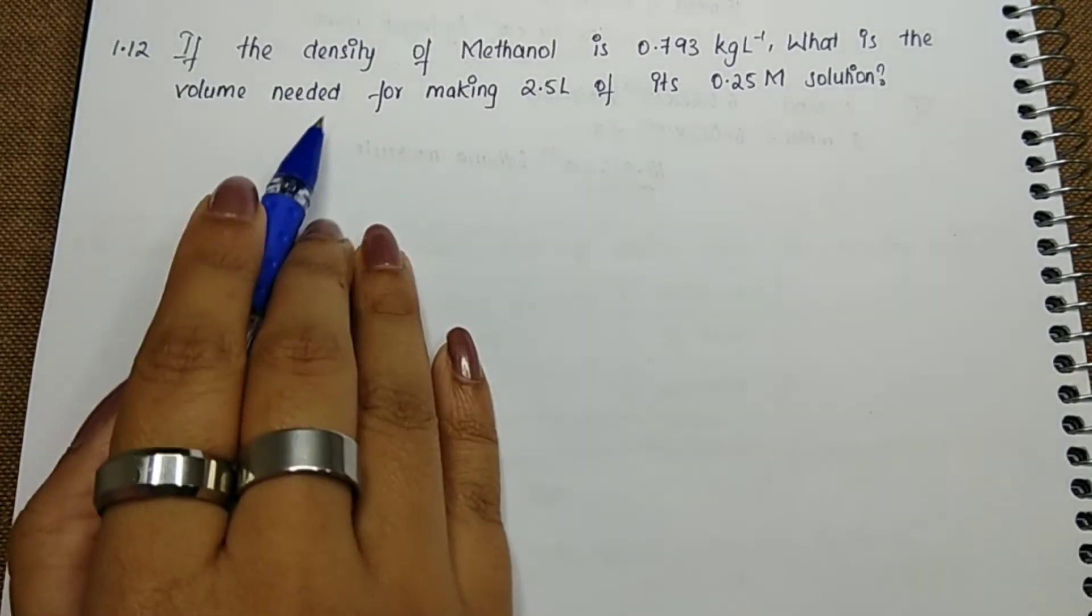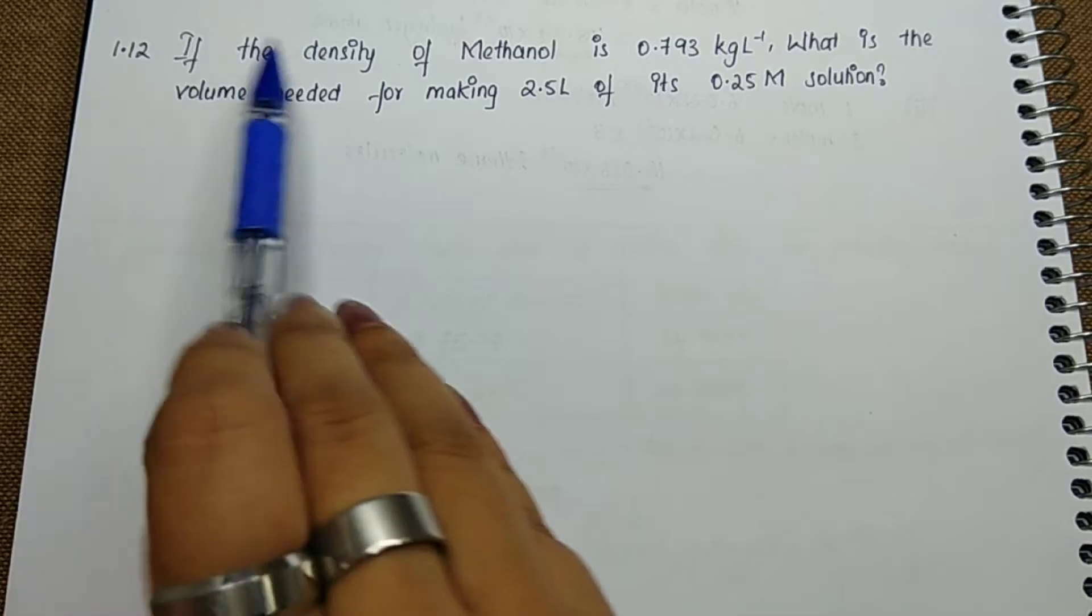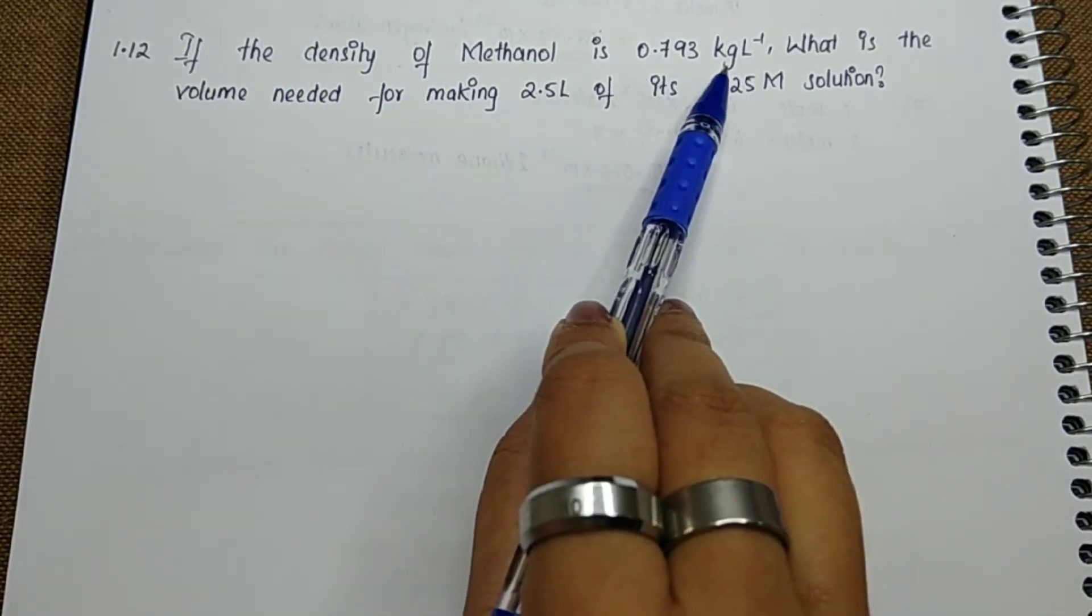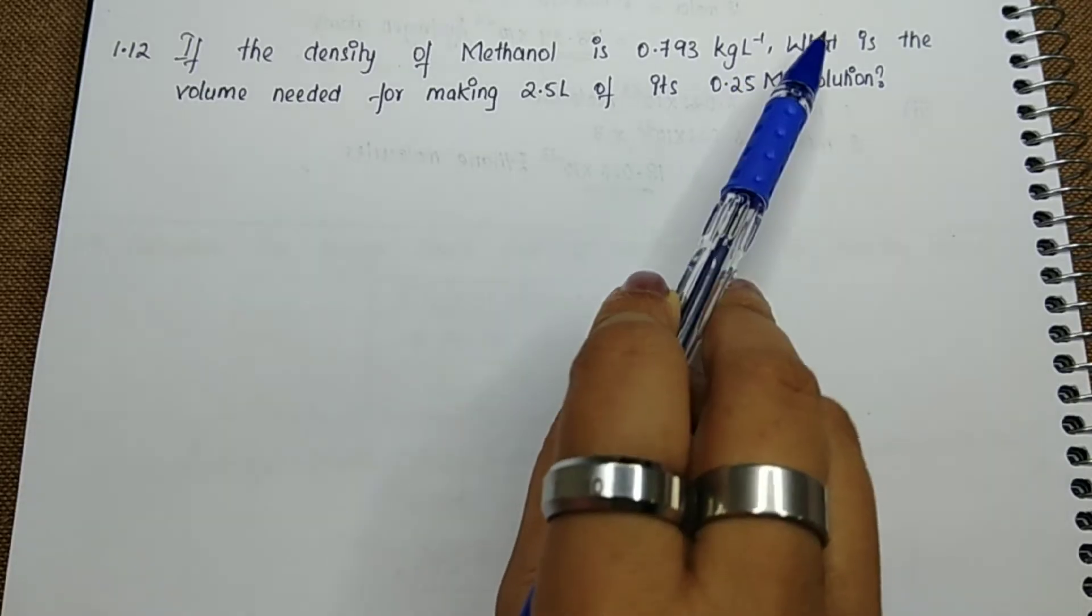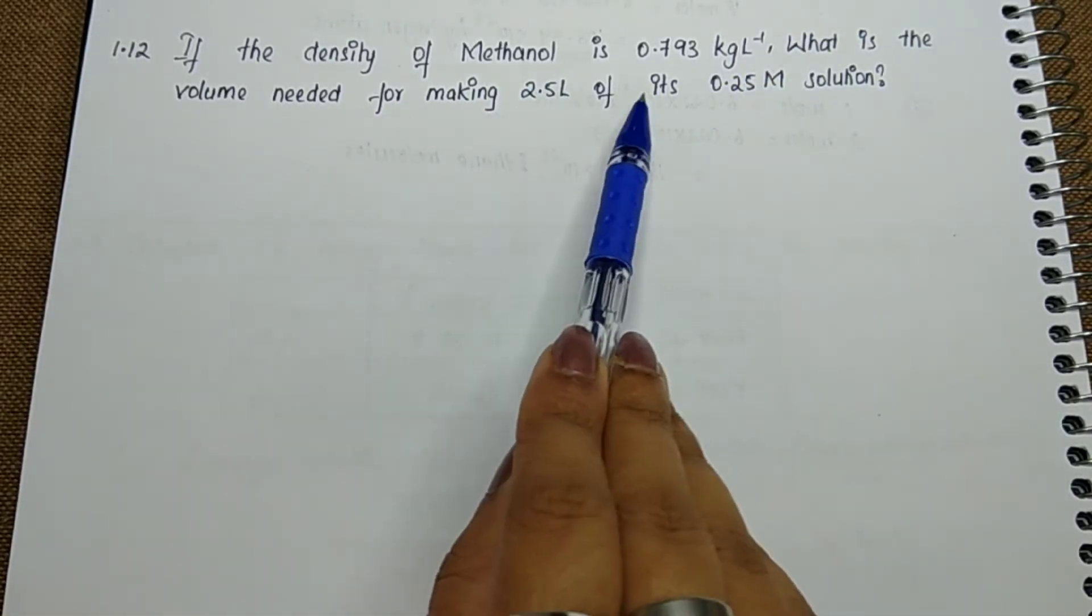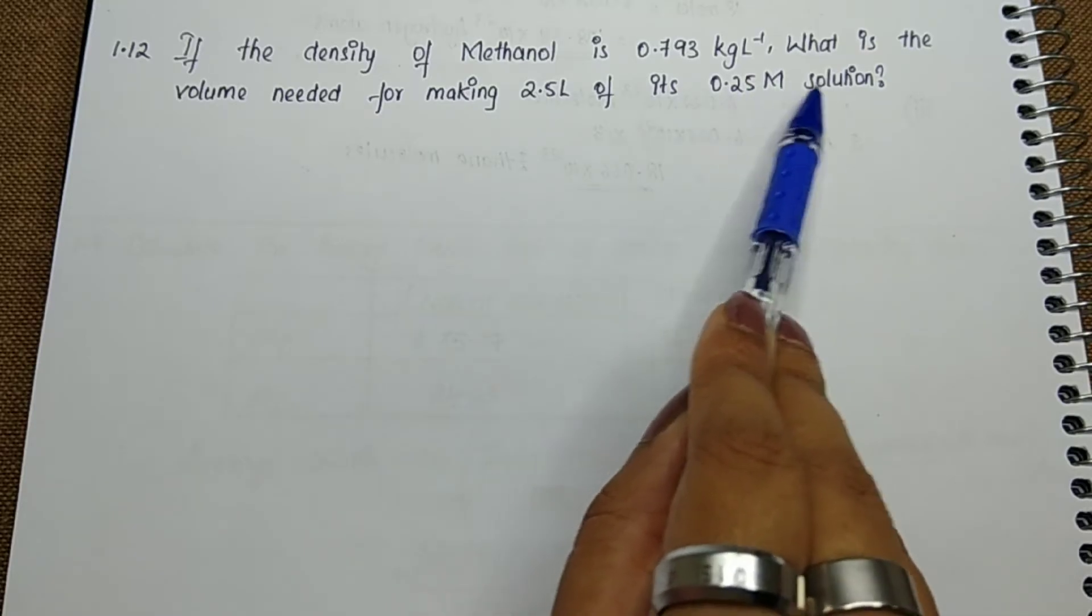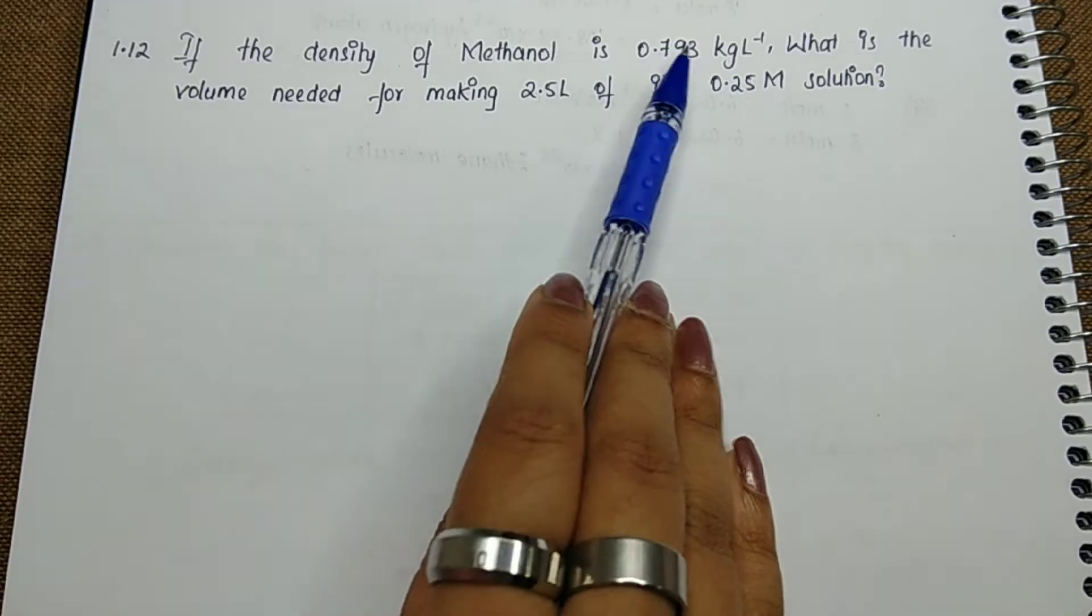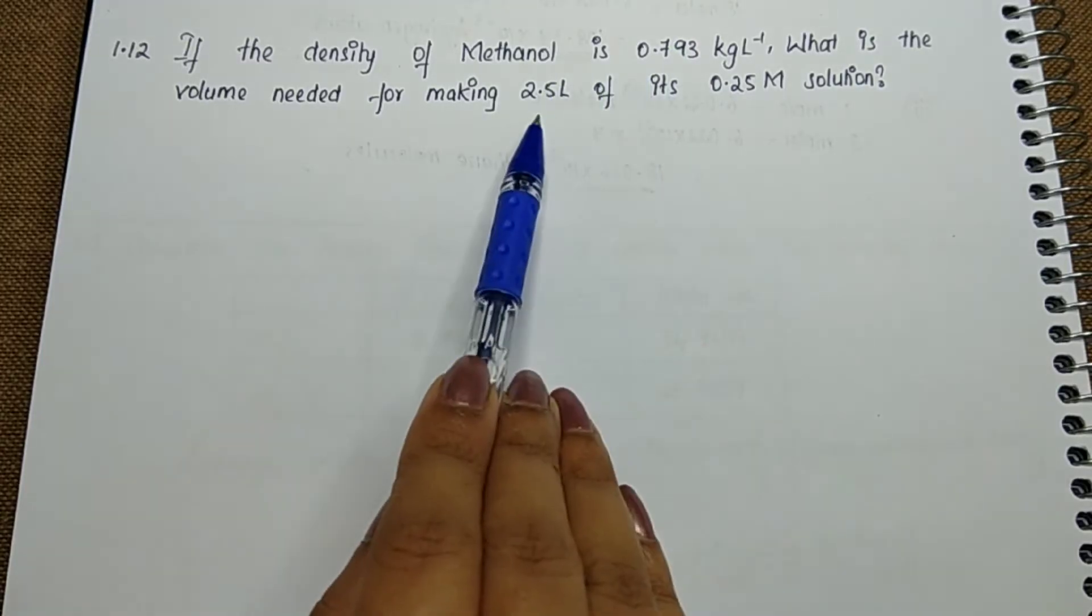Students, question number 1.12: if the density of methanol is 0.793 kilogram per liter, what is the volume needed for making 2.5 ml of its 0.25 molar solution? In this question, density is given, volume is given, and molarity is given.